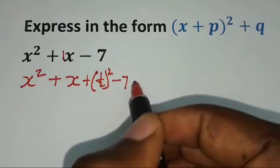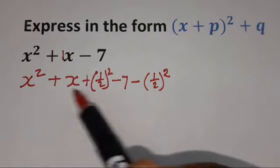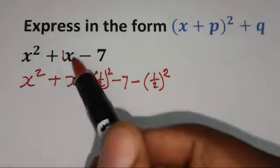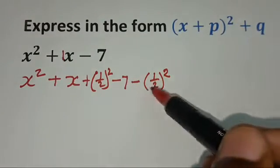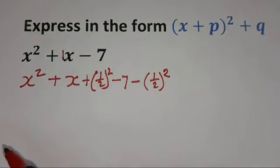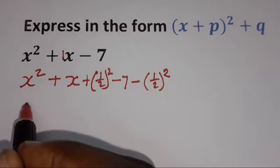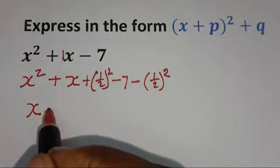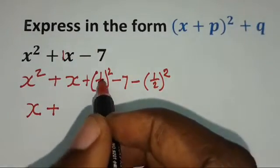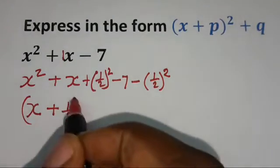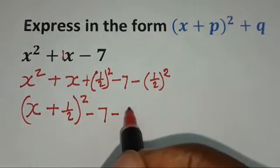Adding it on the left is the same as subtracting it on the right. We are doing this because we are not changing anything on the original expression. We are just rewriting it in this form. So here we have formed a perfect square trinomial. We are going to complete the square. We'll have x, not x squared, just x, then plus — in this case it's a plus — then half of the coefficient of x, which is 1 over 2. Then everything squared. Then minus 7 minus 1 over 2 squared is 1 over 4.